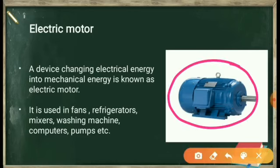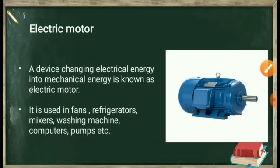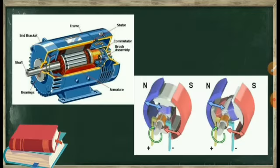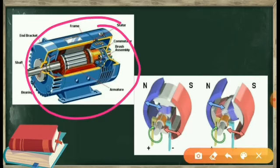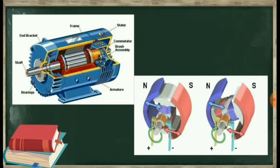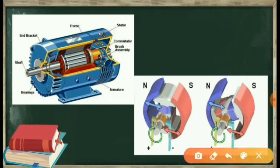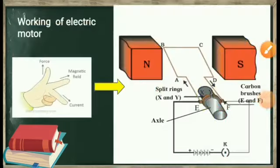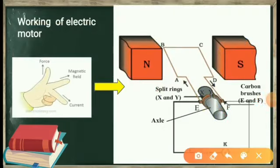An electric motor is a device that converts electrical energy into mechanical energy. It is used in many appliances such as fans, refrigerators, mixers, washing machines, computer pumps, etc. Inside the motor, the main part is a shaft that rotates, and it is connected to a magnet with a north pole and a south pole.